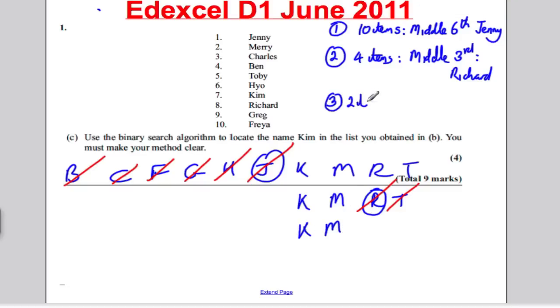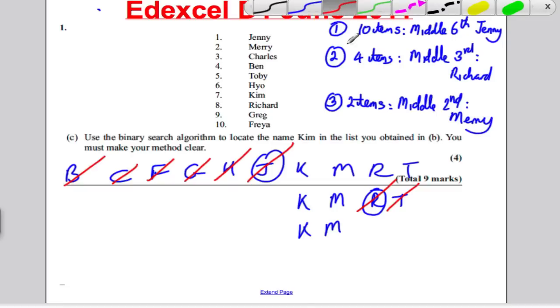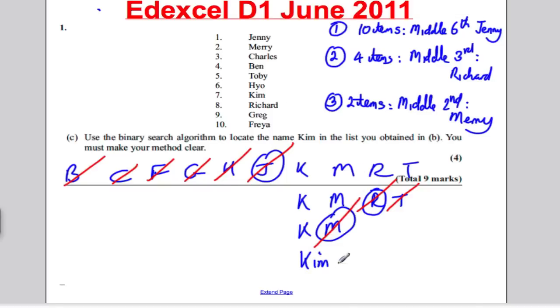So you've got two items. The middle is the second, which is M, which is Mary. So you would highlight Mary, and Mary isn't the one you're looking for, so you cross it off and you'd be left with finally K, which is Kim at the end. And that's how you get the four marks there, and you've stated clearly what you've done at each stage. I would write this underneath to show your working. I just didn't have the space on the page.